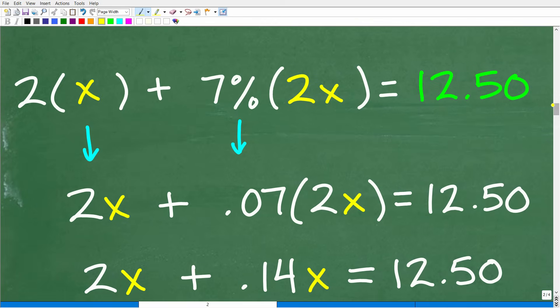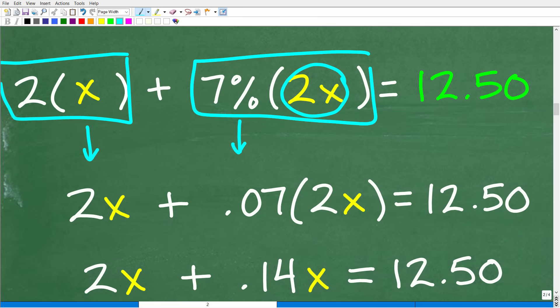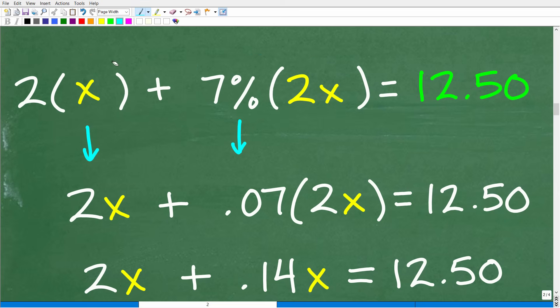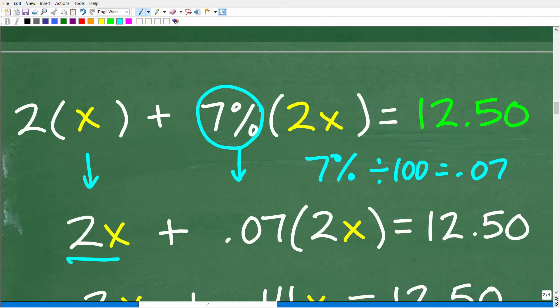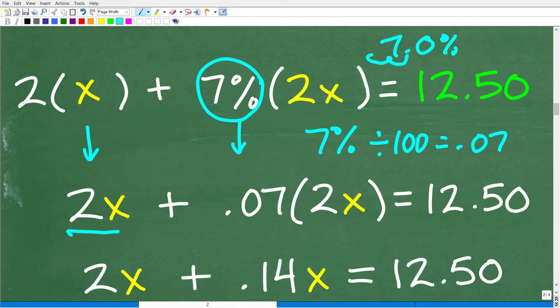All right, so here is our setup. So we have two times X, X is the original price. So this means we just doubled the price and then we have 7% of the doubling of the price, so this is our tax, is equal to $12.50. So now what we're going to do is go ahead and solve this equation. So two times X is just 2X. Now the interesting part of this equation is this percent. So how do we find a percent of a number? We want to change that to a decimal. So to change a percent to a decimal, you simply divide by 100. So 7% divided by 100 is 0.07, or you can think of it this way: 7.0%, we've moved the decimal point over two places to the left, which is effectively the result of dividing by 100.